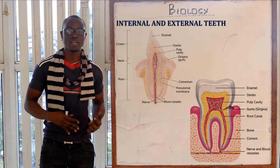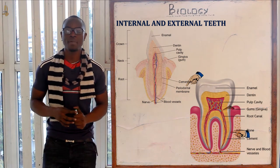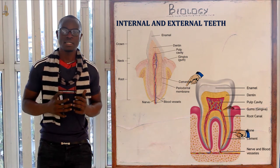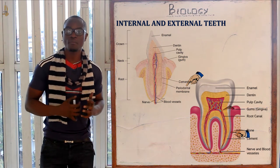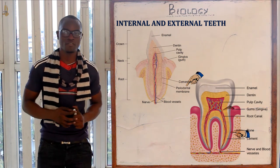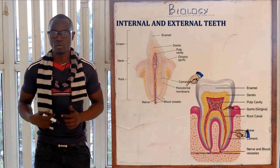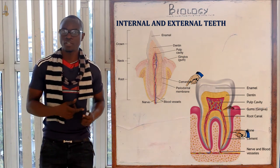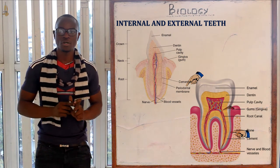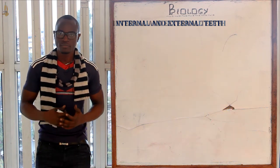Finally, the periodontal membrane is a tough membrane made up of collagen fibers located between the cement and the jawbone. Its function is to hold the teeth securely in the jawbone.